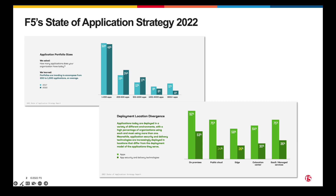Applications themselves are transforming and evolving — from simple, static apps to complex, highly interactive experiences over time. Complexity increases with the proliferation of various application frameworks, cloud and edge computing, distributed apps, microservices, ChatGPT, and so on. According to F5's State of Application Strategy 2022, most organizations manage 200 to 1,000 apps, and 26% of app security and delivery technologies are distributed and deployed at the edge for efficiency outcomes.